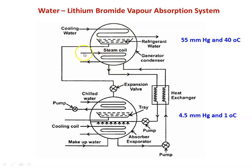Starting from the generator-condenser cylinder, there is a steam coil that heats the lithium bromide and water solution, producing water vapor. The generator produces water vapor, which moves up in the cylinder. A cooling water circuit with a condenser coil is present; when water vapor falls on the condenser coil, it is condensed and the condensate is collected in a refrigerant water tray. The refrigerant liquid water then flows to the absorber through the expansion valve, where pressure is reduced.